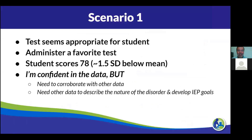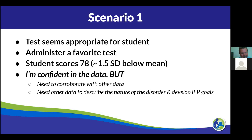Scenario one: I have a test that seems appropriate for my student. I administered a test I know has good properties — it was designed for diagnosing a language disorder. The student scored about one and a half standard deviations below the mean. I'd be fairly confident in that data, though I'd still want to see how it stands up with other data I collect. And equally as important: what other data can I get to show the nature of that disorder, document the educational impact, and develop my IEP goals?